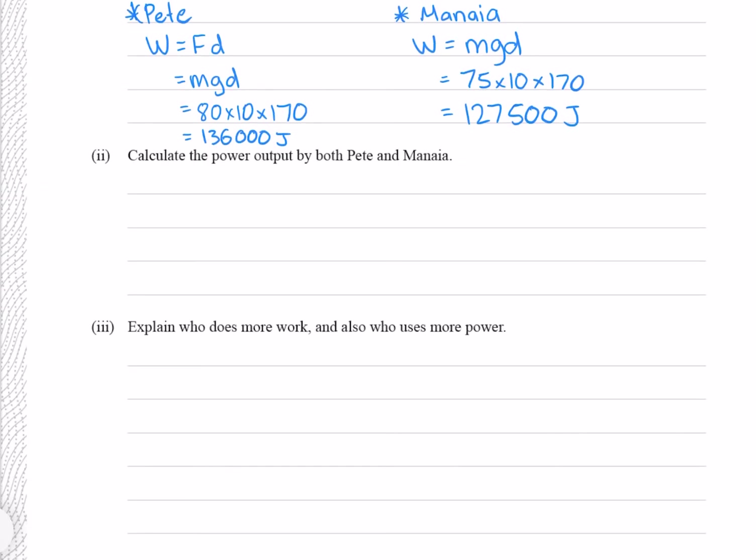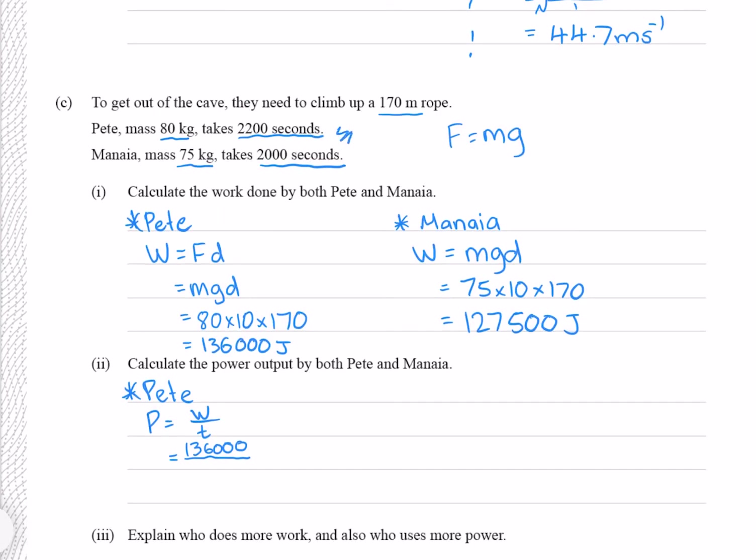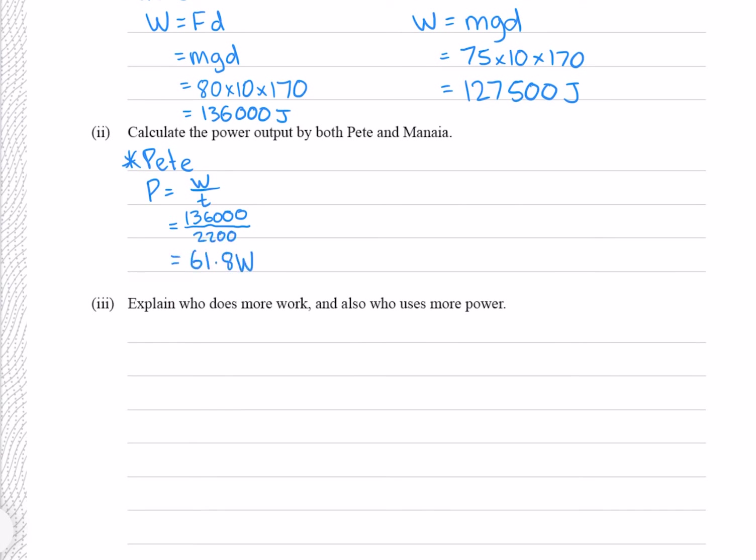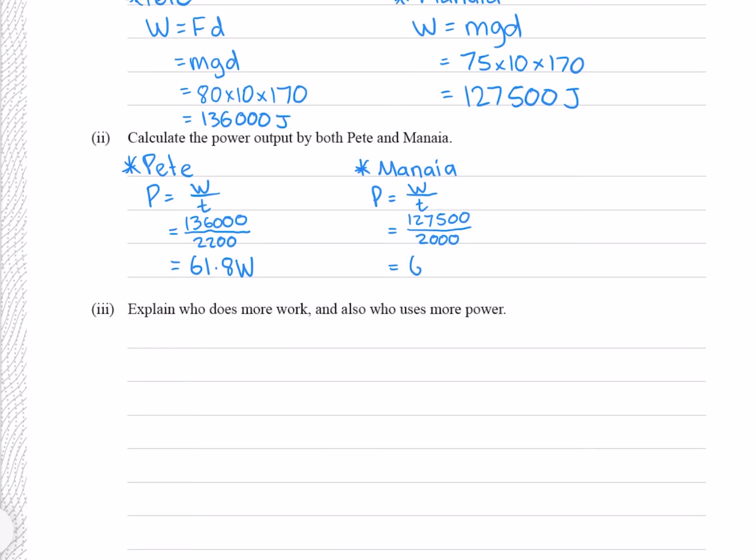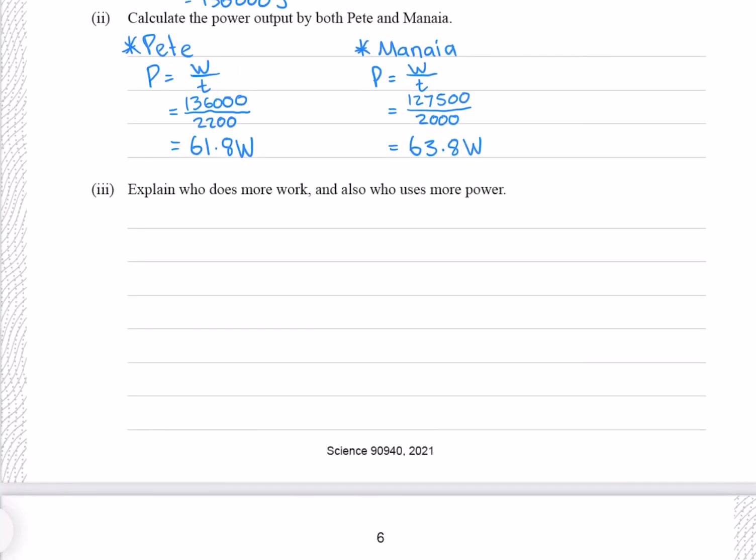Calculate the power output by both Pete and Manaya. We'll start with Pete again. Our power is our work divided by time. Pete's work is 136,000 and Pete's time is 2200 seconds, which gives me 68.1 watts. Let's do the same for Manaya. Power is work over time. Manaya's work was 127,500 and her time was 2000 seconds, which gives me 63.8 watts. Explain who does more work and who uses more power. We can see that Pete does more work because 136,000 is bigger than 127,500. But we see that his power is less than Manaya's. The reason his power is less is because he spends his work over a larger time. Pete does more work as he has more mass, but uses less power as he takes longer to climb.